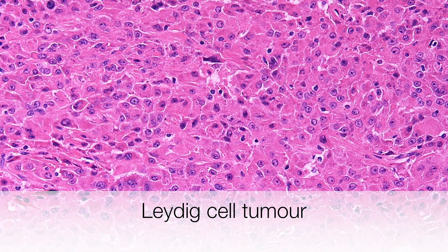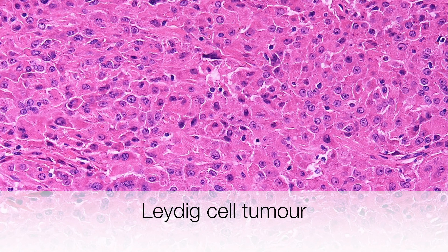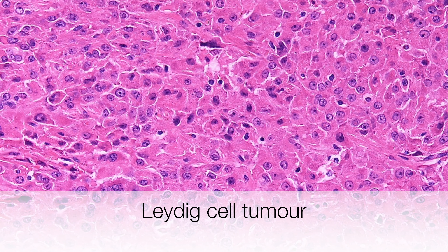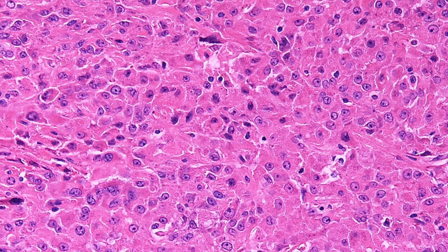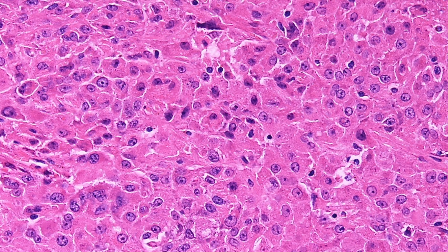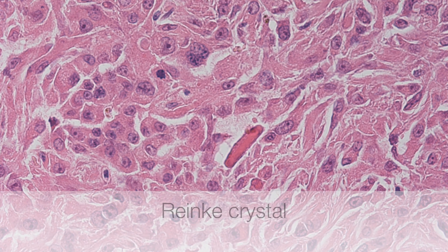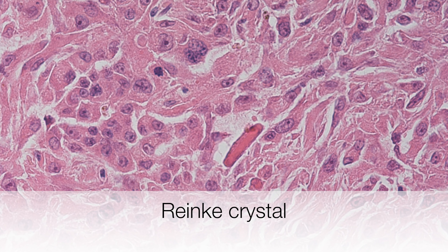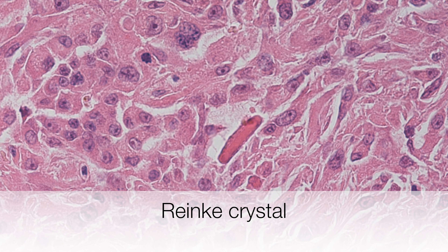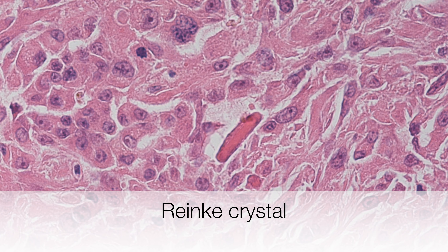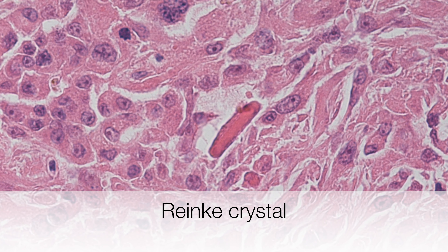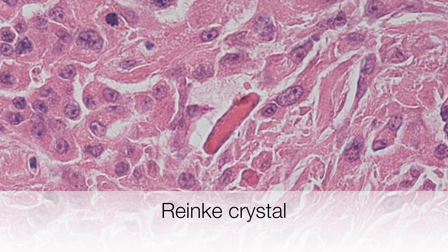This is the typical histology of a Leydig cell tumour and it is composed of sheets of cells with granular pink staining cytoplasm. The rod-shaped pink structure we are zooming into is an example of a Reinke crystal or crystalloid.